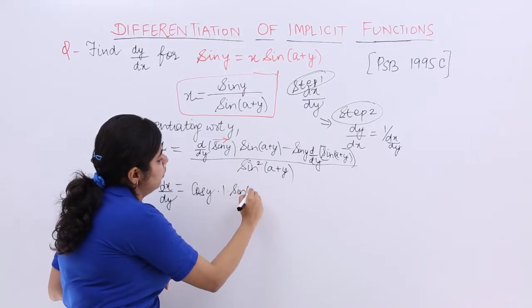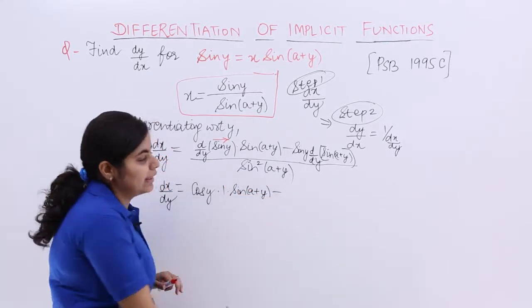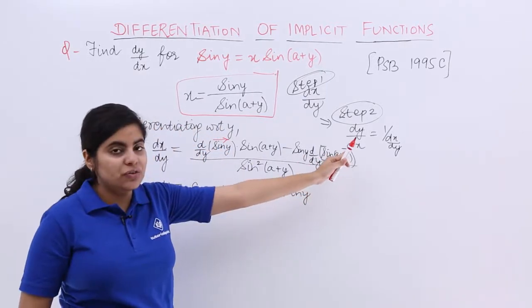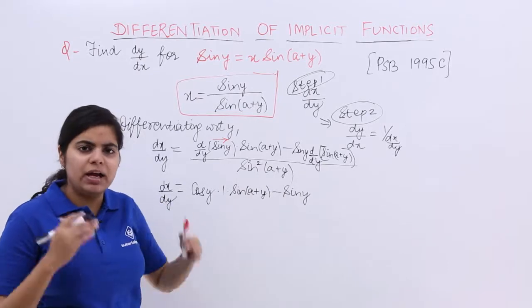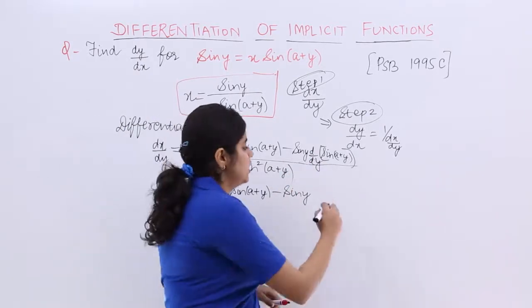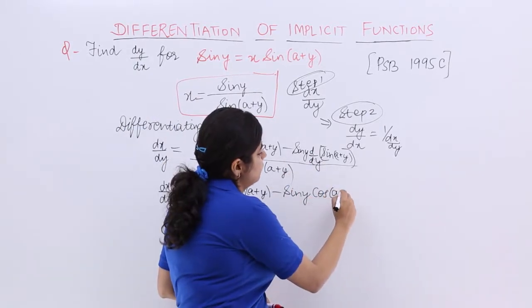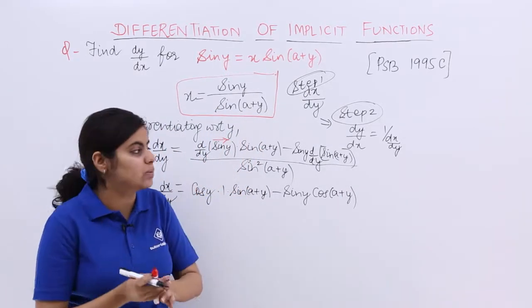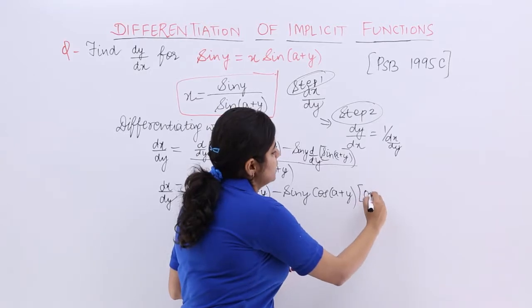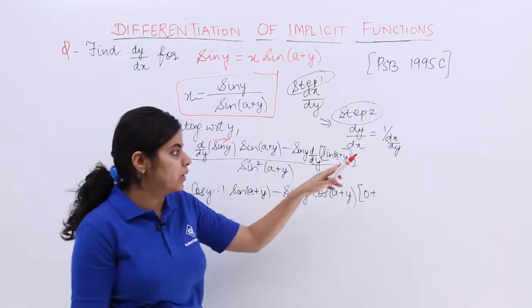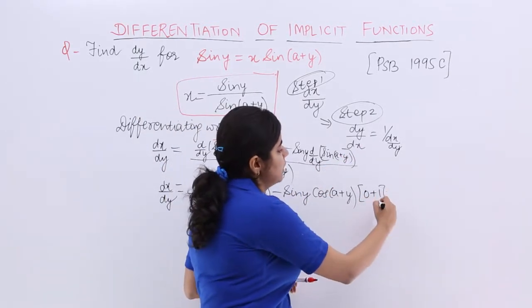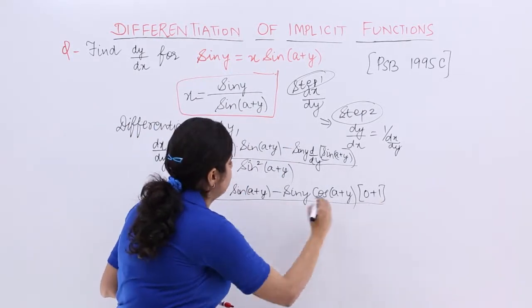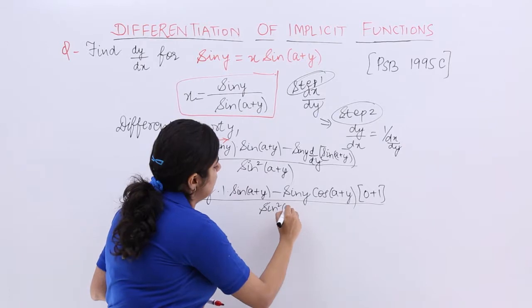Minus sin y as it is. Differentiation of sin(a+y) with respect to y: sine's differentiation is cos(a+y), then you have the bracket having a+y. Differentiation of a constant is zero, differentiation of y with respect to y is 1. Denominator does not change, it is sin square(a+y).